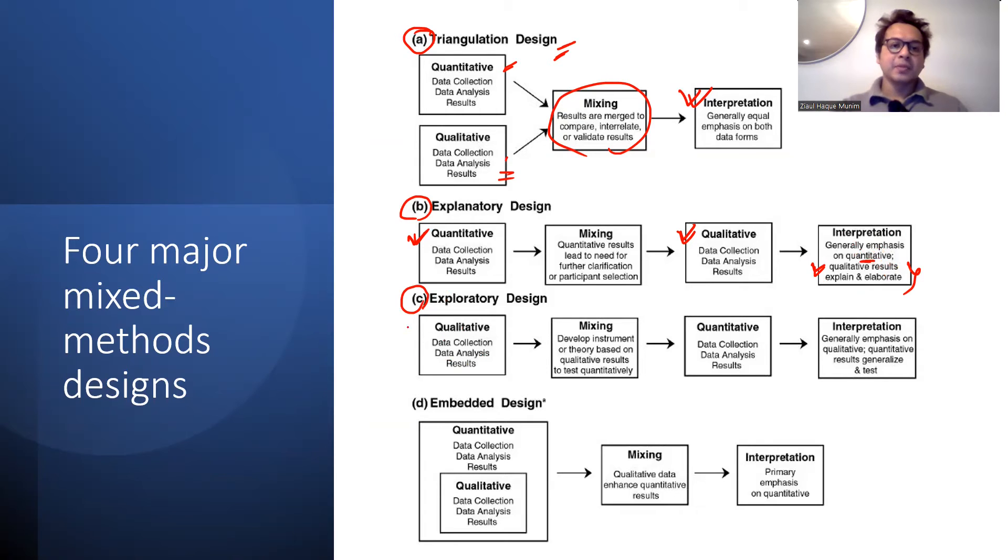Then we have the exploratory research design. Here we start with the qualitative design—data collection, analysis, and results. Often based on the qualitative results, we develop some instruments or theory that we would like to test quantitatively. Then we do quantitative data collection, analysis, and results, and proceed with the interpretation. The emphasis is usually on the qualitative part, but we also use the quantitative results to generalize and test our hypotheses or theories.